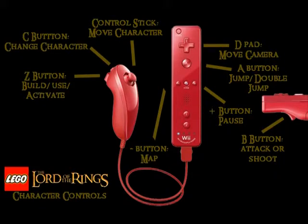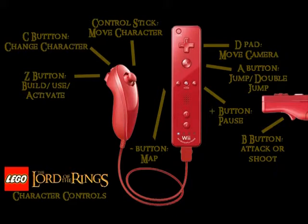Starting with the Nunchuck, to move your character you have to use the control stick. They just move in every direction that you can press the control stick. The C button lets you change characters, and if you hold it down you can get a character wheel, which you can play any character on in story mode and also free play mode. But free play mode also introduces a new tactic that I will be showing off when we get there.